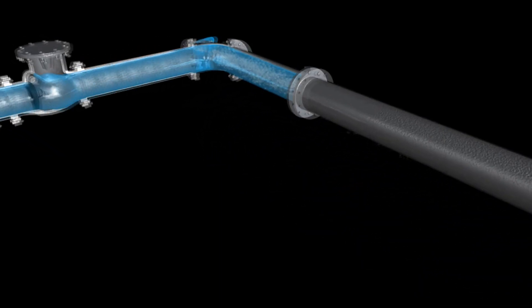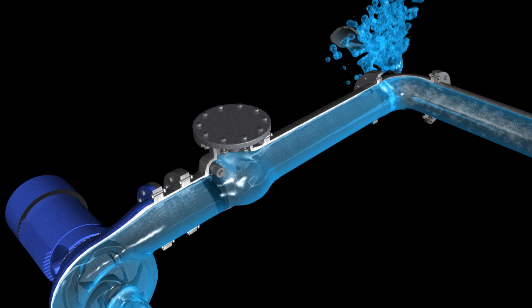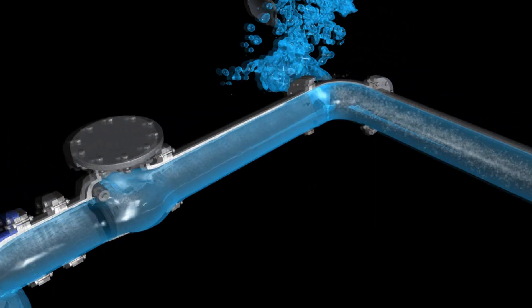The pressure momentum of the fluid flow can result in a pipe rupture at a weakened point in the system, such as an elbow.